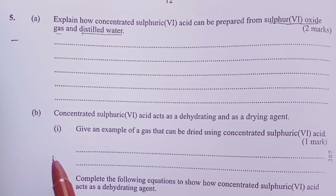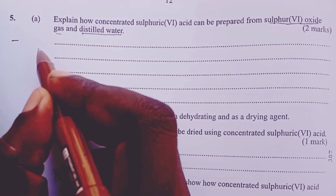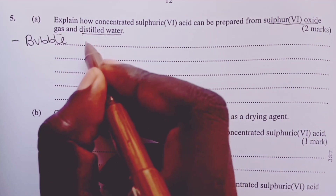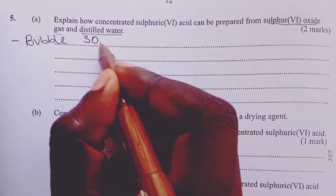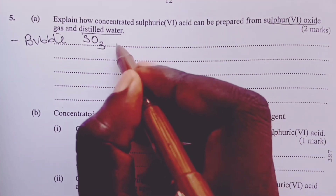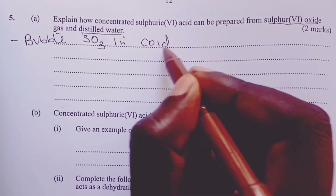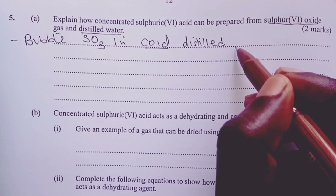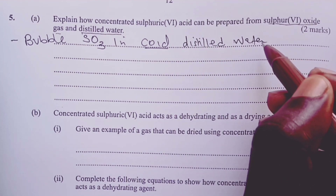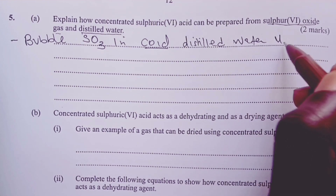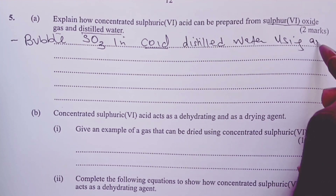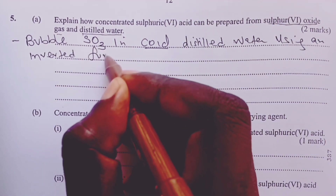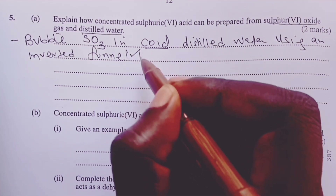We can actually use distilled water directly, but the procedure would be as follows: we would bubble sulfur trioxide into cold distilled water. Apart from using cold distilled water, we would also use an inverted funnel. This would give the candidate the first mark.